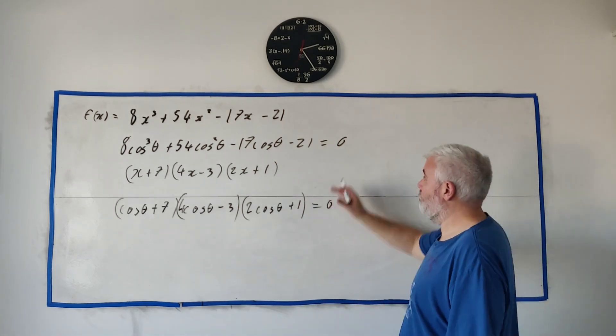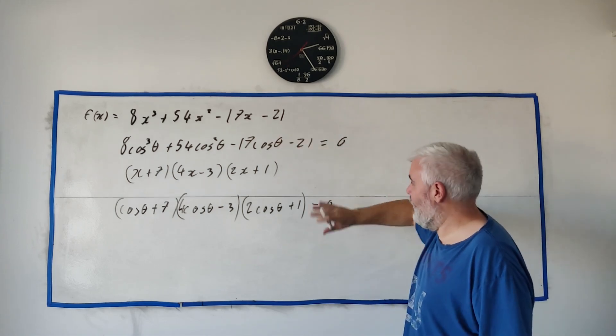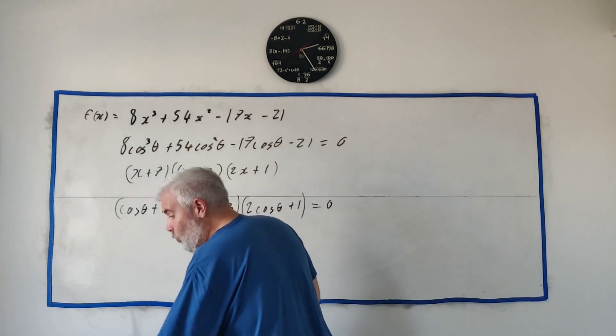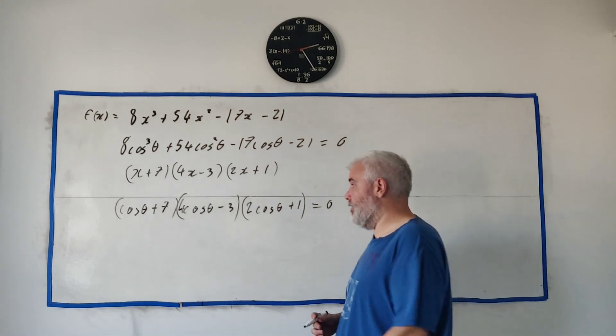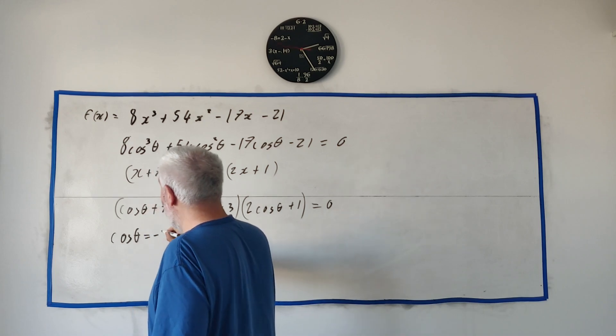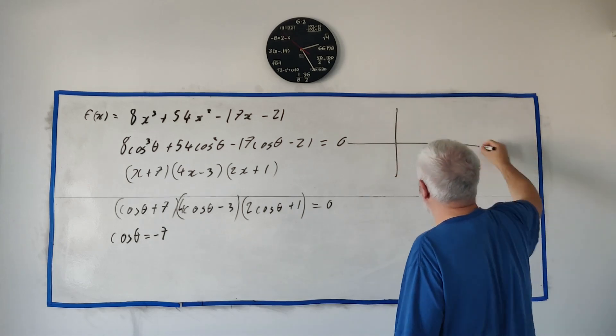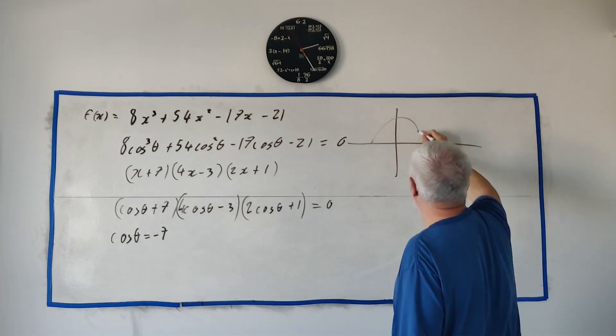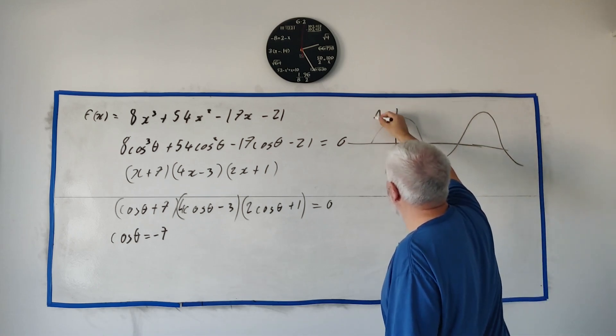We would get cosine theta plus seven, four cosine theta minus three, and two cosine theta plus one. These all multiplied together must equal zero because these are identical. So the factors of this should be the same as this and when they equal zero that means one of these factors at least one of them must equal zero. So let's see which it is.